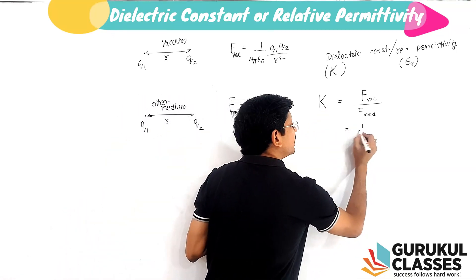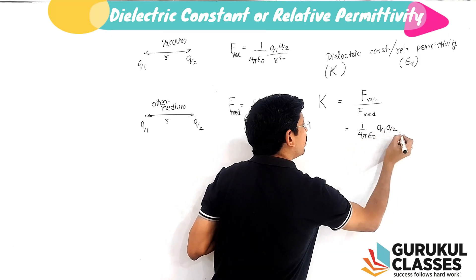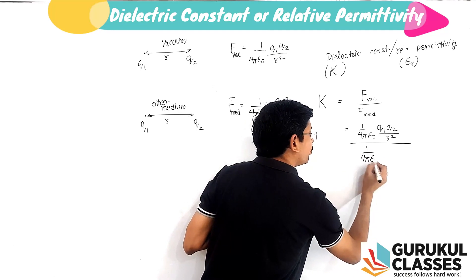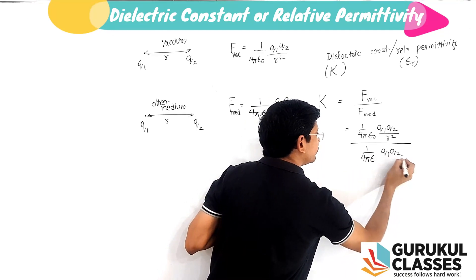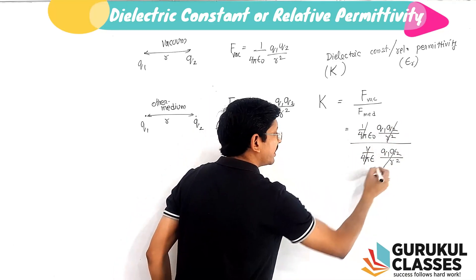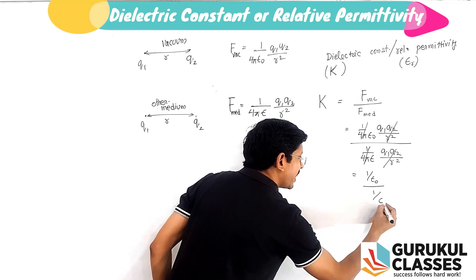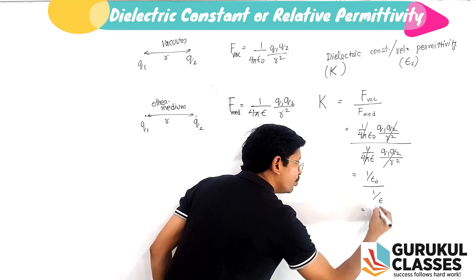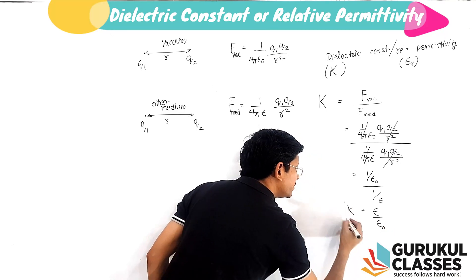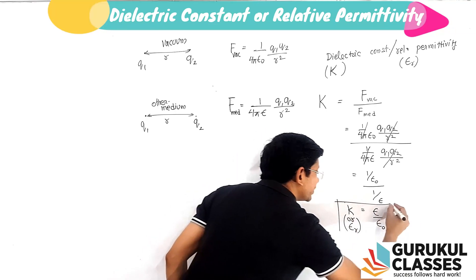If we substitute the values, the numerator becomes 1/(4π ε₀) × q₁q₂/r², and the denominator has 1/(4π ε). The 1/(4π) cancels out, leaving ε/ε₀ on top — which is the expression for dielectric constant, also called relative permittivity.